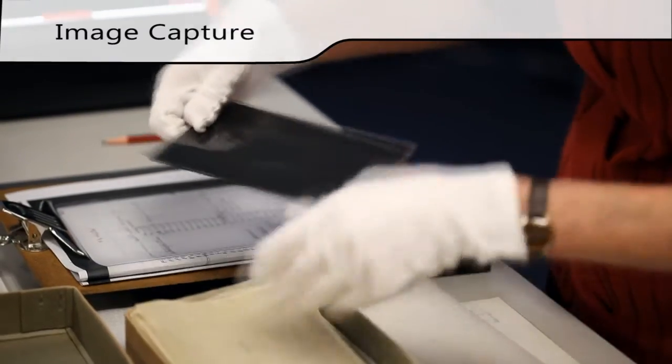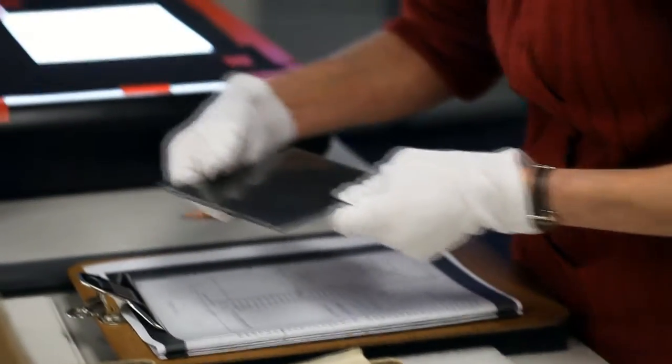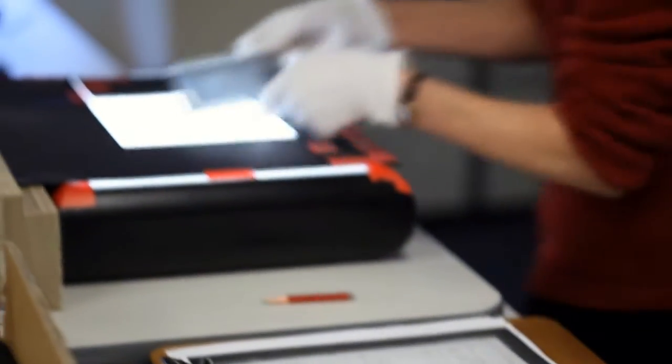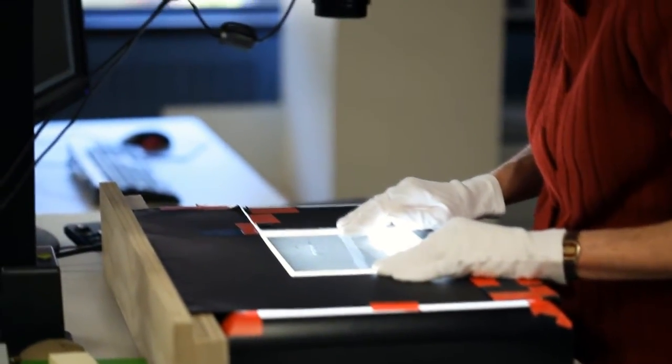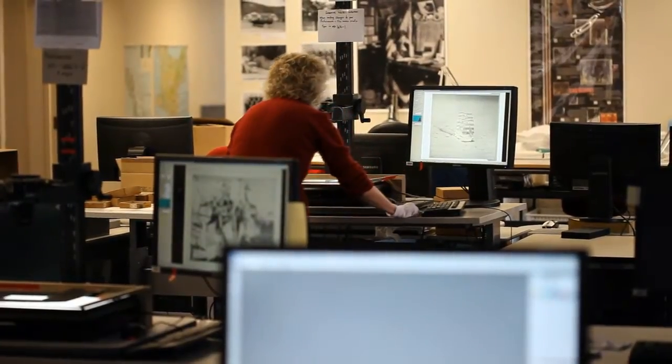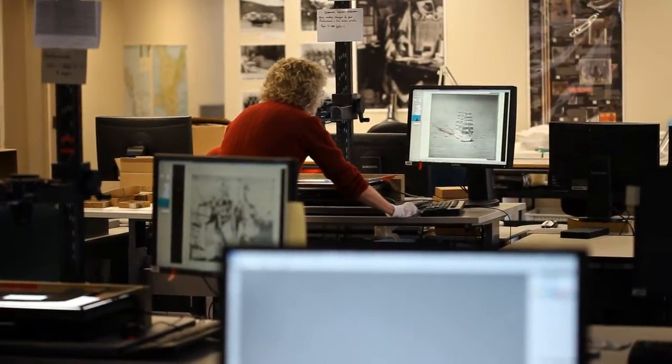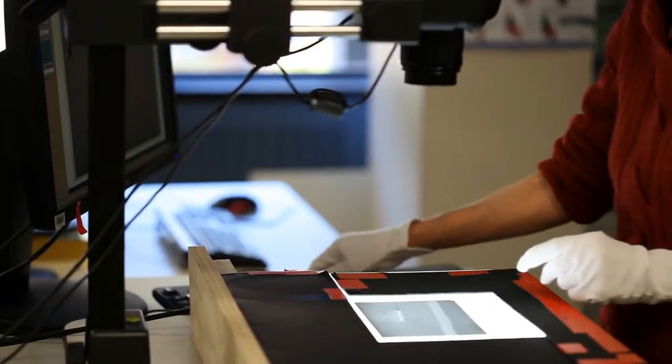Negatives are captured using Canon 5D Mark II cameras over a daylight balanced light box. Each camera is tethered to a PC and controlled by software. Exposure tests are completed and the image saved directly to the server.